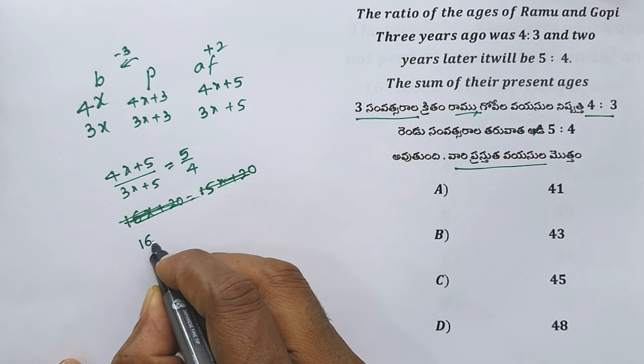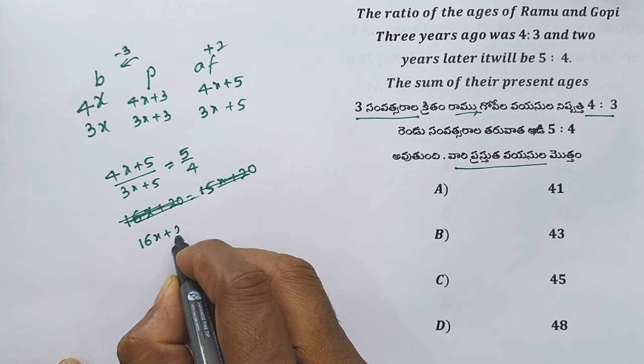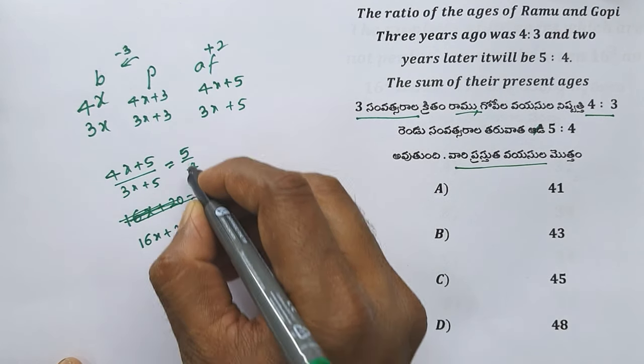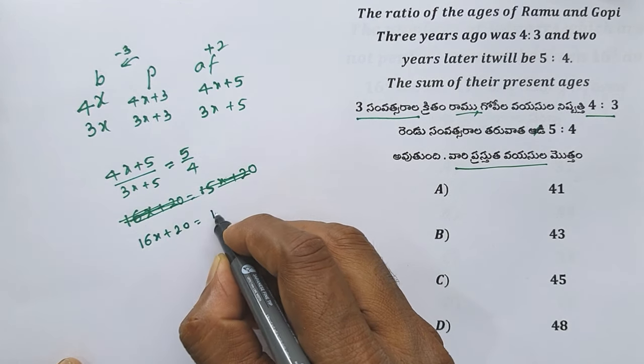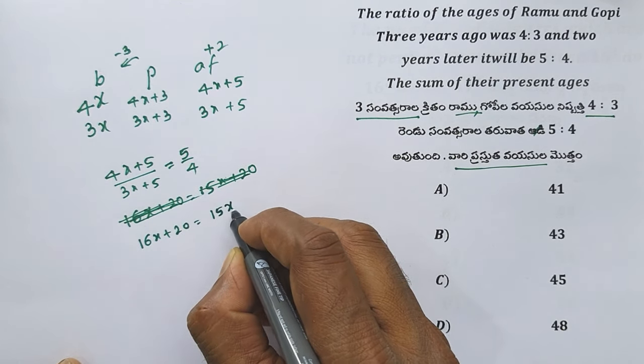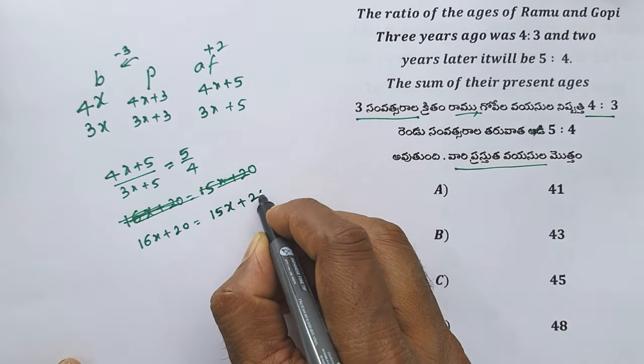Cross multiply: 16x plus 20 equals 15x plus 25. Solving, x equals 5.